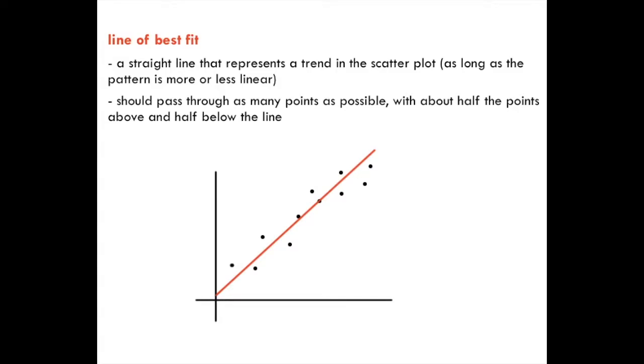When you've got a bunch of data and you draw a straight line through the data, it should pass through as many points as possible, about half the points above and half below. You can see here I've got about five points above and about five points below the line of best fit.